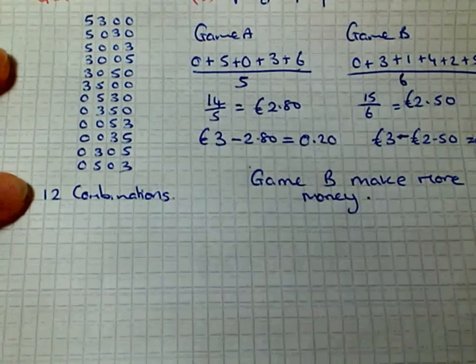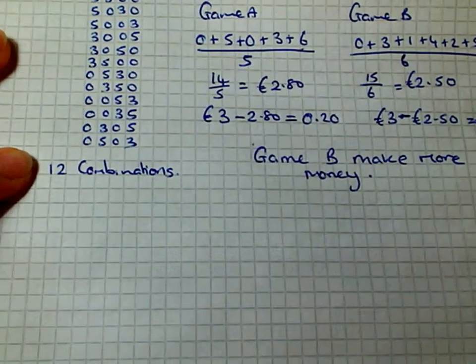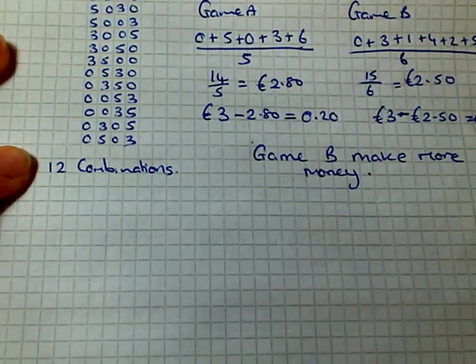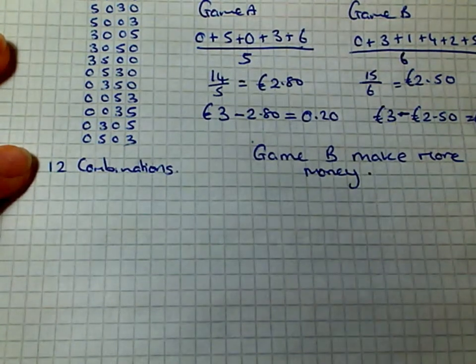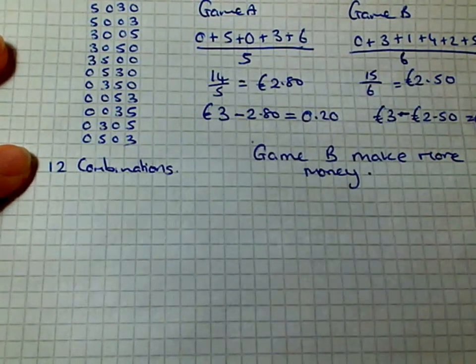Part C of the question. Mary plays game B six times. Find the probability that the arrow stops in the 4 euro sector exactly twice.